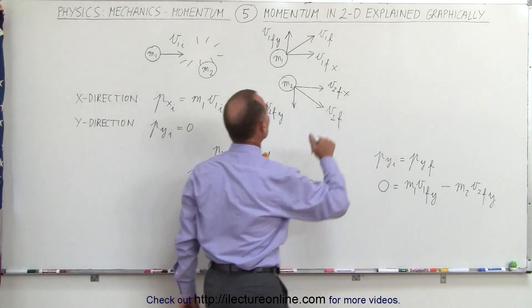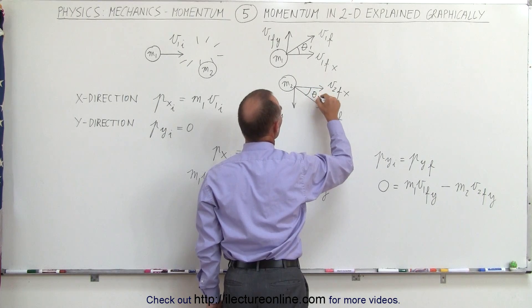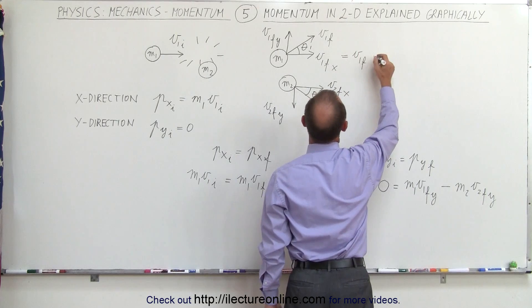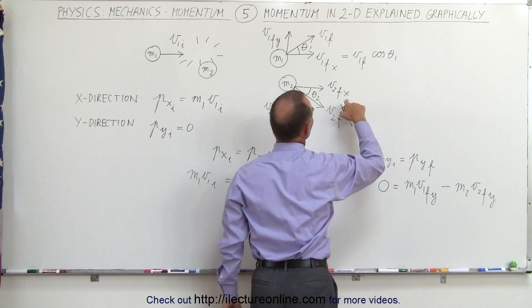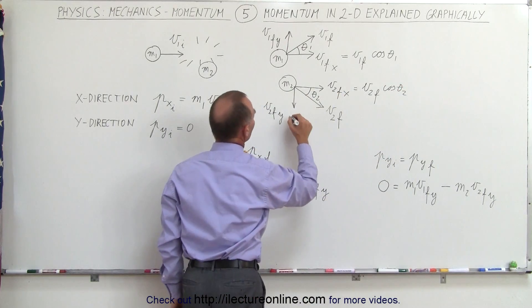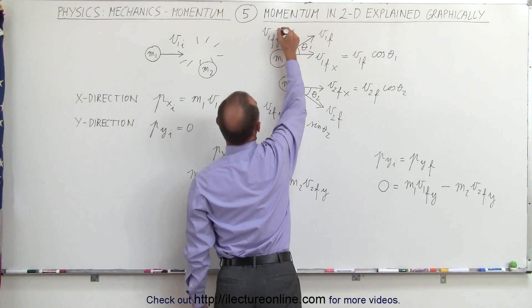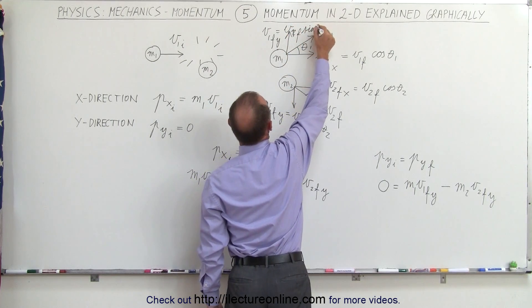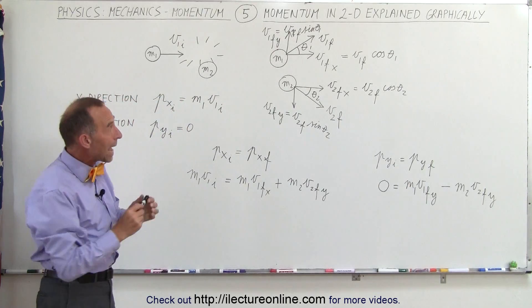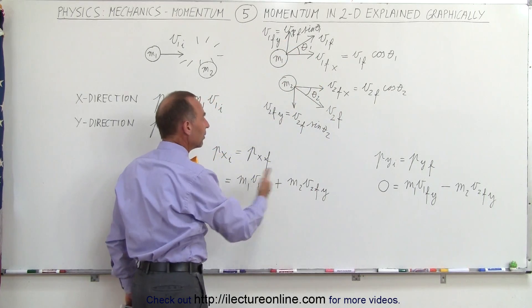Now, if we know the direction of motion — if we know the angle relative to the horizontal and call this theta sub 1, and we know this angle relative to the horizontal, call that theta sub 2 — we can say that v1 final in the x-direction equals v1 final times the cosine of theta sub 1, and v2 final in the x-direction equals v2 final times the cosine of theta sub 2. In the y-direction, this equals v2 final times the sine of theta 2, and this can be written as v1 final times the sine of theta sub 1.